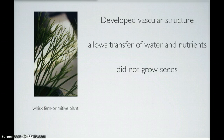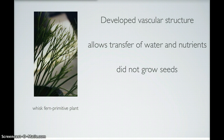Theories on the origin of vascular plants suggest that they probably arose from an ancestor in the group of non-vascular plants known as bryophytes. The most derived bryophyte, the mosses, share an ancestor with a line that gave rise to all vascular plants.